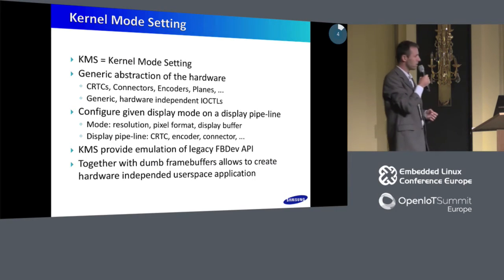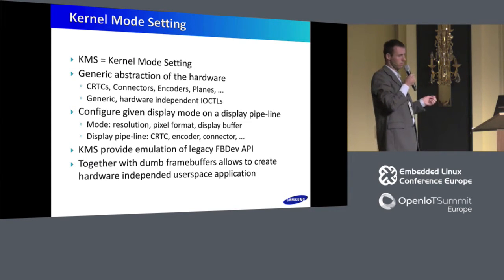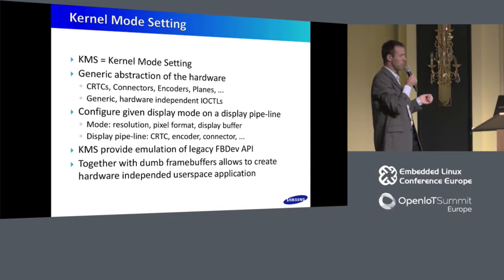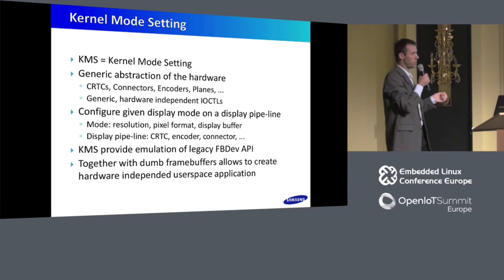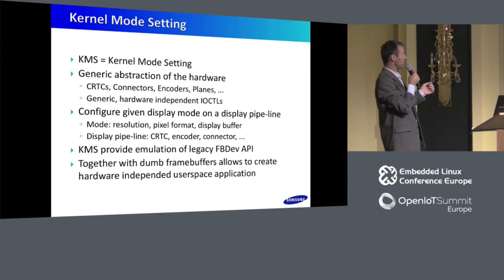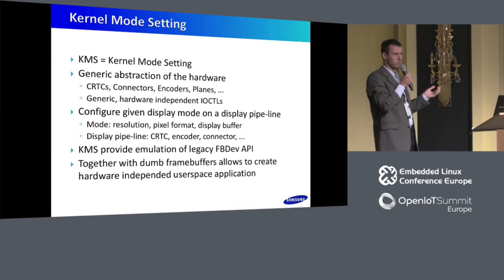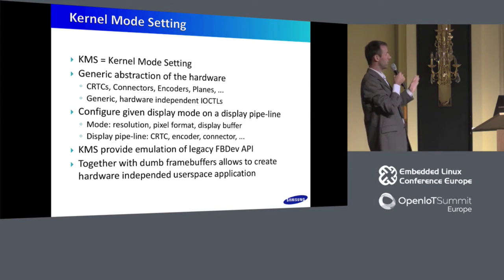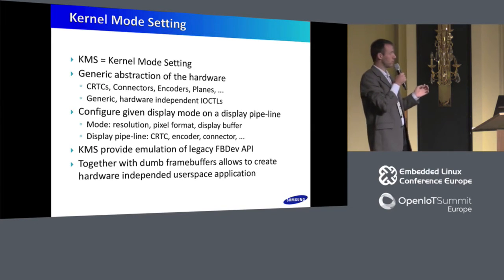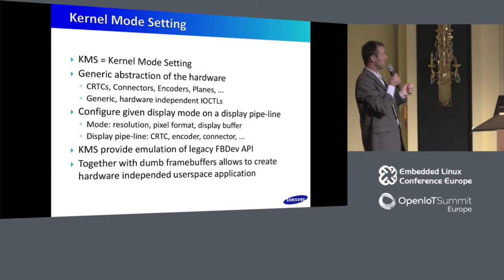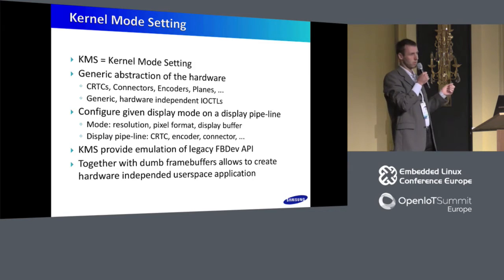What is KMS — kernel mode setting? In my opinion, this is a very important step in DRM development, because it allows applications for the first time to be somehow generic. It is an abstraction of the hardware that introduced various entities like CRTCs, connectors, encoders, and planes. It was the first time that some generic hardware-independent IOCTLs were introduced.